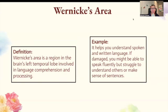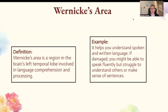Wernicke's area. Wernicke's area is a region in the brain's left temporal lobe involved in language comprehension and processing. It helps you understand spoken and written language. If it's damaged, you might be able to speak fluently but struggle to understand others or make sense of sentences. Remember, these are the two that will come up in an FRQ or MCQ — Broca's area versus Wernicke's area — so you really do need to know the difference between those two.